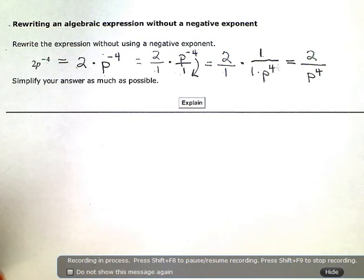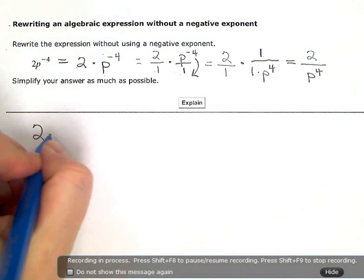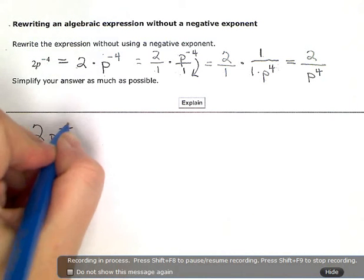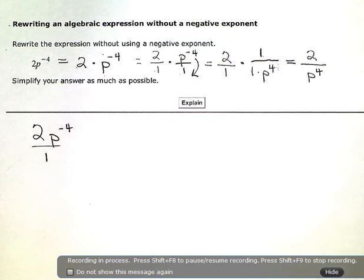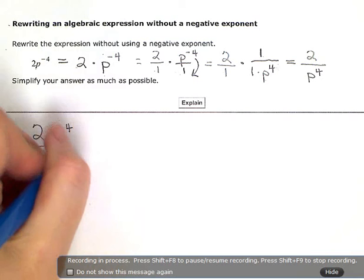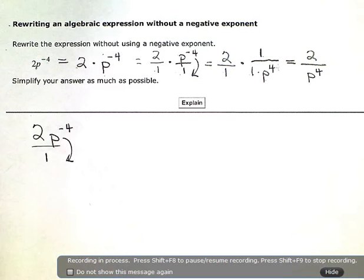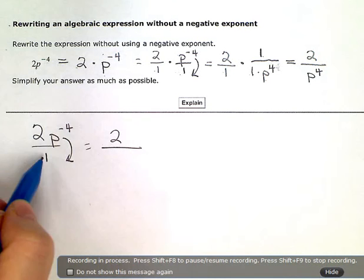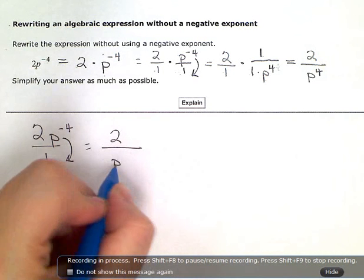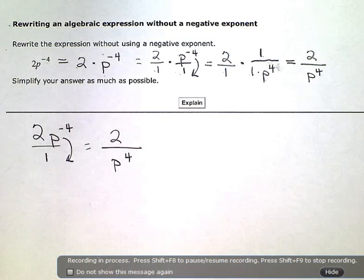All that really happened to kind of simplify this or make that explanation a lot shorter - I could have kept it together like this. The p just wants to move downstairs. The 2 is happy where he is. But the p is going to move downstairs. So I'll have p to the positive 4 downstairs.